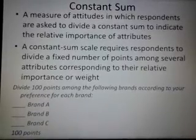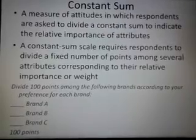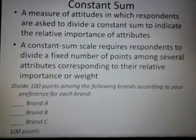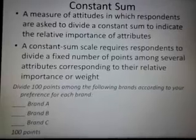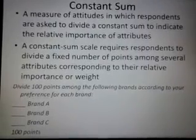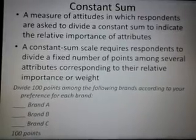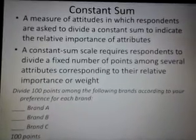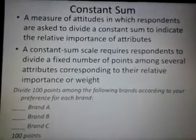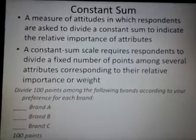So if a respondent gives 50 points to brand A and then 30 points to brand B, then the respondent will have to give only 20 points to brand C to make it a constant sum of 100. Another respondent who gives 60 to brand B will have to give 10 to brand C.